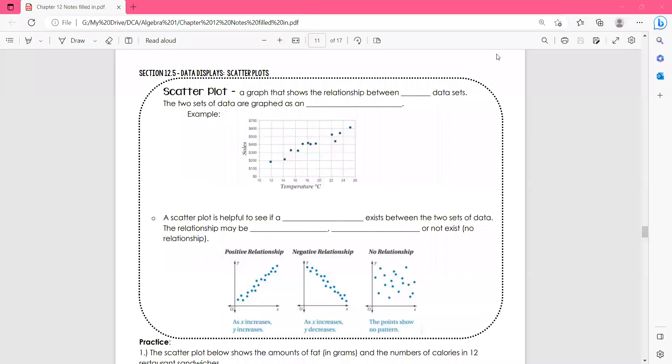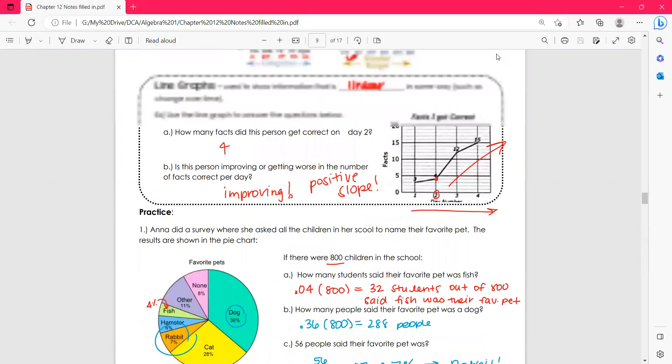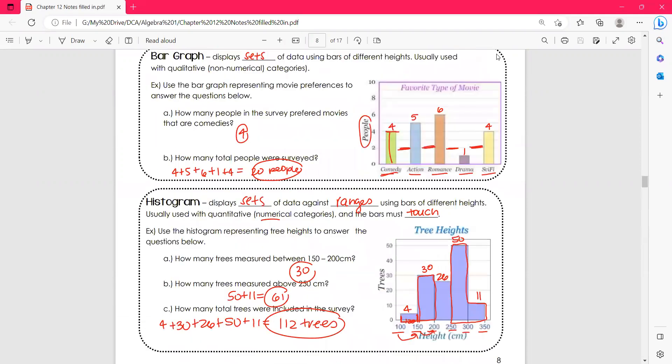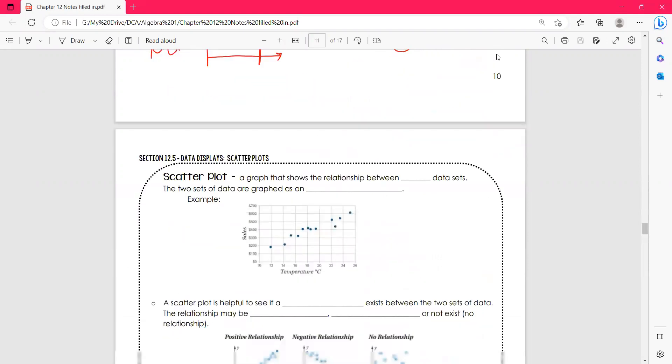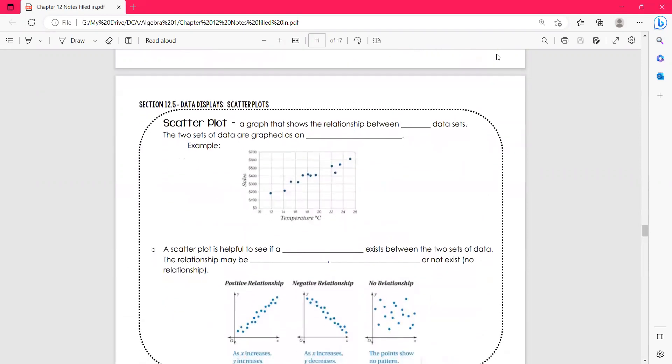Hey everyone, so this is our next section in chapter 12 which is all about data displays. And here we're going to talk about one last data display, a scatter plot. So last week we learned about pie charts, bar graphs, histograms, and line graphs.